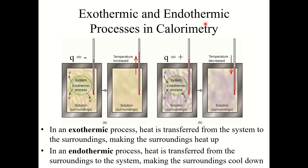Let's talk about those words exothermic and endothermic now that we have our words system and surroundings. This shows an example of an exothermic process. In an exothermic process, heat is transferred from the system — whatever that reaction is — to the surroundings, which makes the surroundings heat up, and so you would notice the temperature increase. For example, if you dissolved a salt in water and that dissolution process was exothermic, the thermometer would show the temperature increase because heat is transferred from the system to the surroundings.